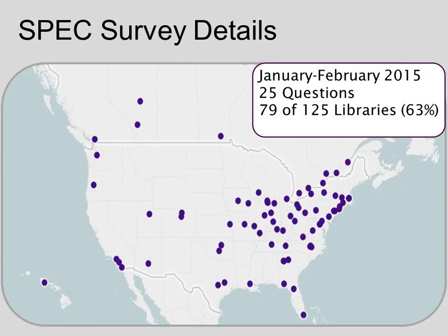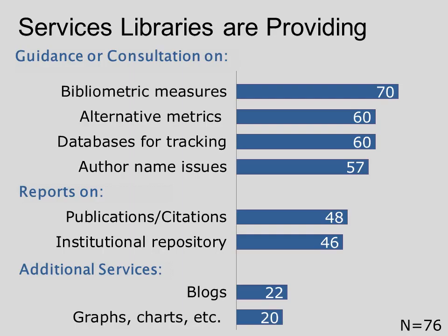The survey ran early this year, and 79 of the 125 member libraries from across North America responded. We asked libraries if they were providing services to researchers related to scholarly output assessment, and 96 percent reported they are providing these services. We then asked 76 libraries who responded to indicate which services they're providing.